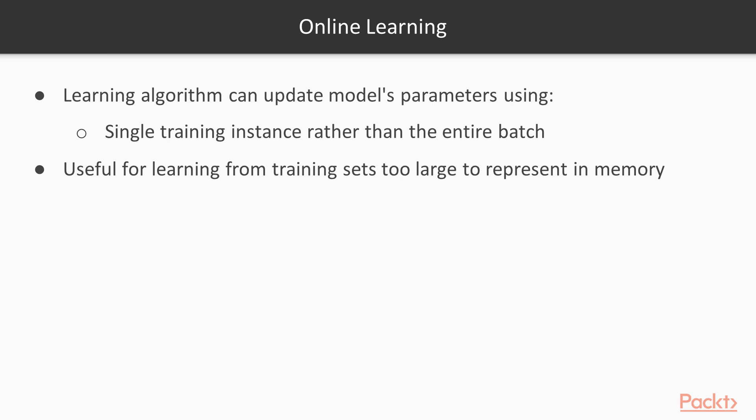Perceptrons are capable of online learning. The learning algorithm can update the model's parameters using a single training instance rather than the entire batch of training instances. Online learning is useful for learning from training sets that are too large to be represented in memory.